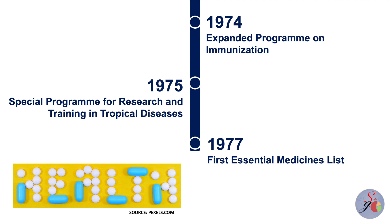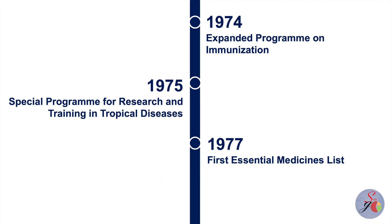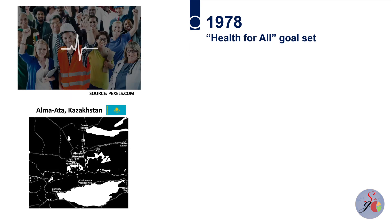This list outlines the medicines that a basic health system needs, and each medicine is selected based on evidence for its safety, effectiveness and value for money. During the International Conference on Primary Health Care in Alma-Ata, Kazakhstan in 1978, an aspirational goal was set for universal health coverage.